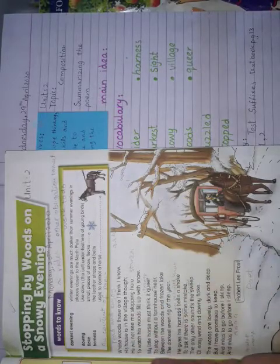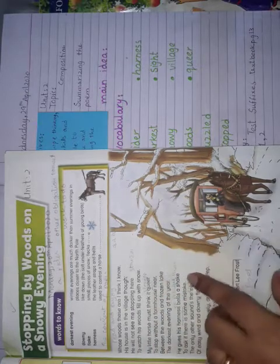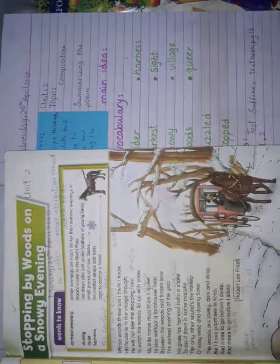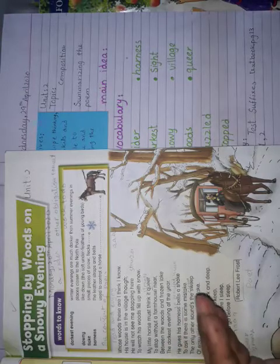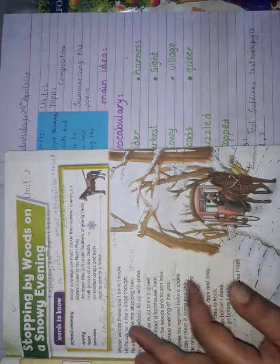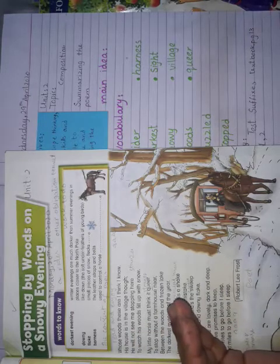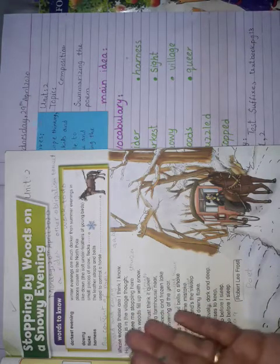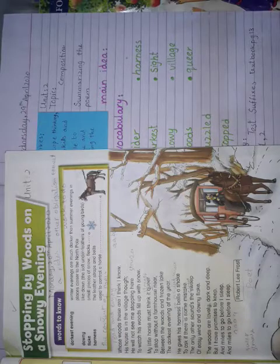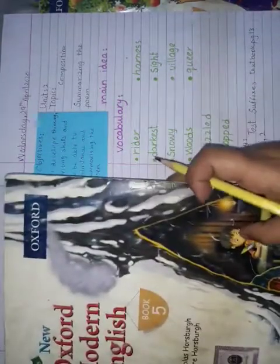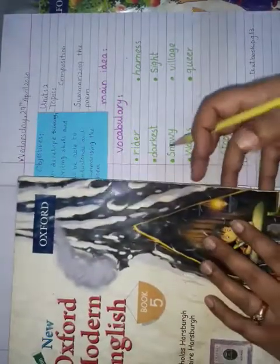This is a beautiful poem about a rider stopping by some woods and looking into them. As you can see in the picture, snow lies all around. Although he likes to stop and gaze at the whole scene, the horse shakes his harness bells and reminds him that he has to go home, because this is the darkest evening of the year.